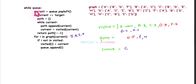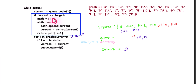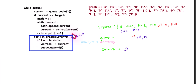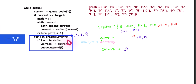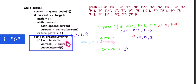Queue is not empty, so current becomes D via queue dot pop left. D is not the target. For I in graph of D — that is A, C, I, G. A is already visited, skip. C is already visited, skip. I is not in visited, so add I with parent D and append to queue. G is not in visited, so add G with parent D and append to queue. No more adjacent nodes, come out of the for loop.